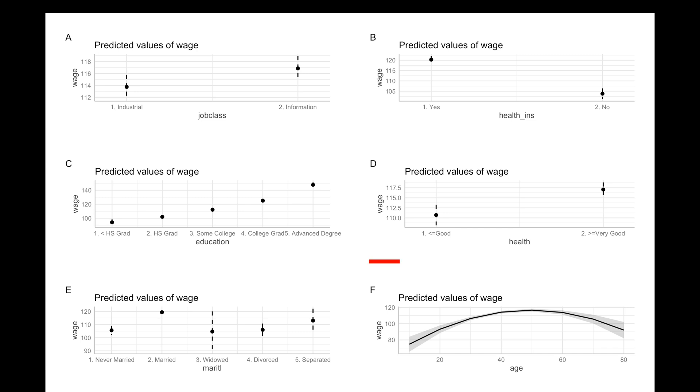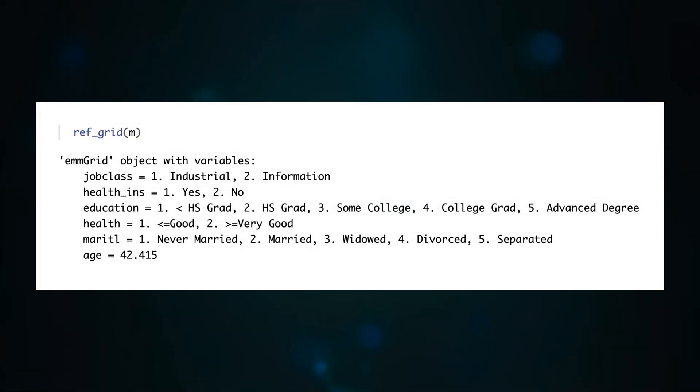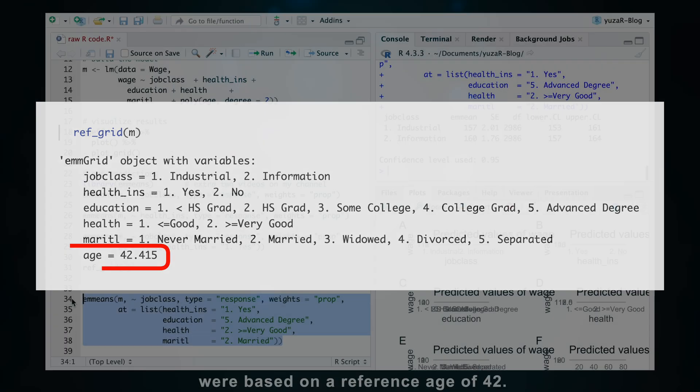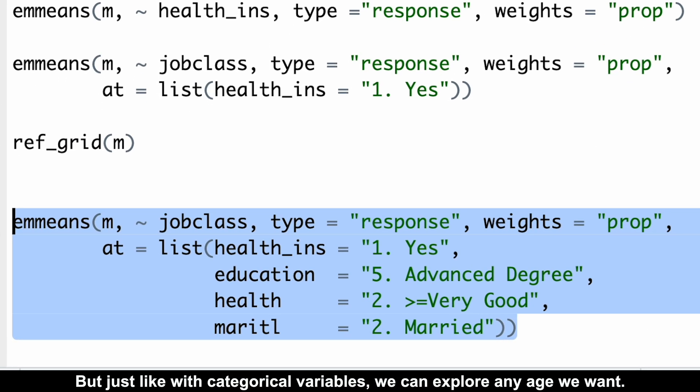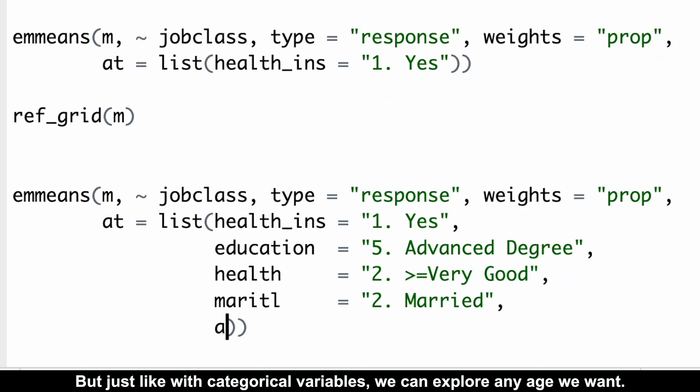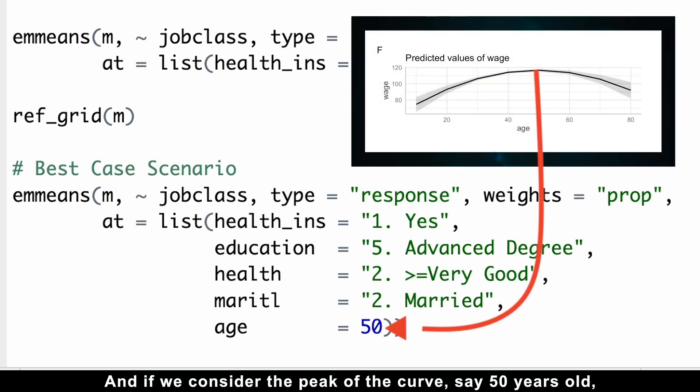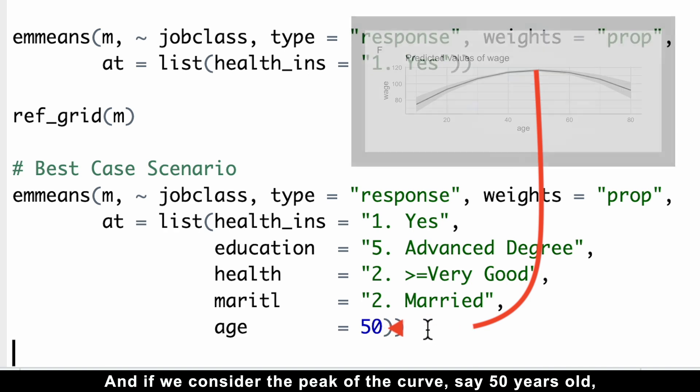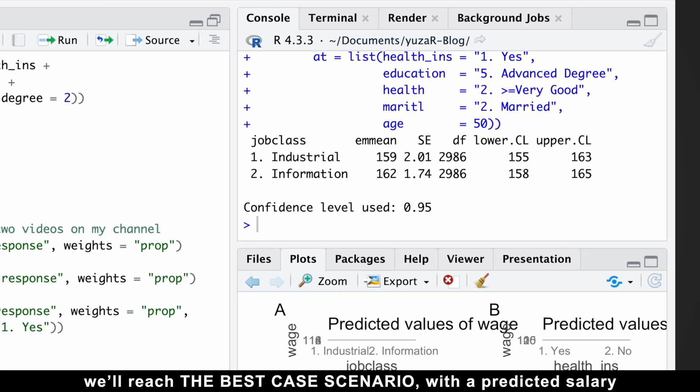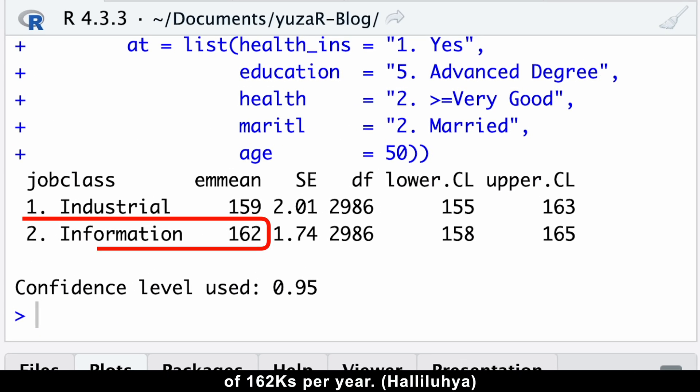Numeric predictors like age require special attention. The RefGrid function shows us that all the predictions were based on a reference age of 42. But just like with categorical variables, we can explore any age we want. And if we consider the peak of the curve, say 50 years old, we'll reach the best case scenario with a predicted salary of $162,000 per year.